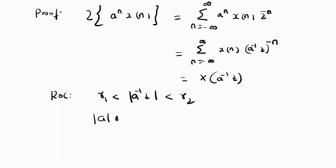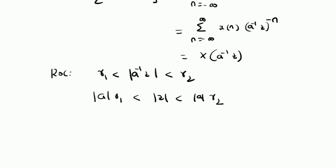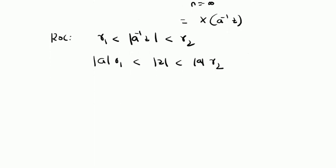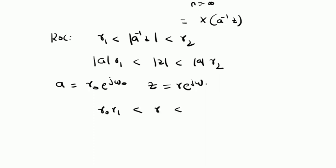In terms of z, the new ROC should be mod(a) multiplied by R1 less than mod z less than mod(a) multiplied by R2. To study the impact of the value of 'a' on the new ROC, let us write a as R₀ e^(jω₀) and z as R e^(jω). Using these definitions, the ROC becomes R₀R1 less than R less than R₀R2.